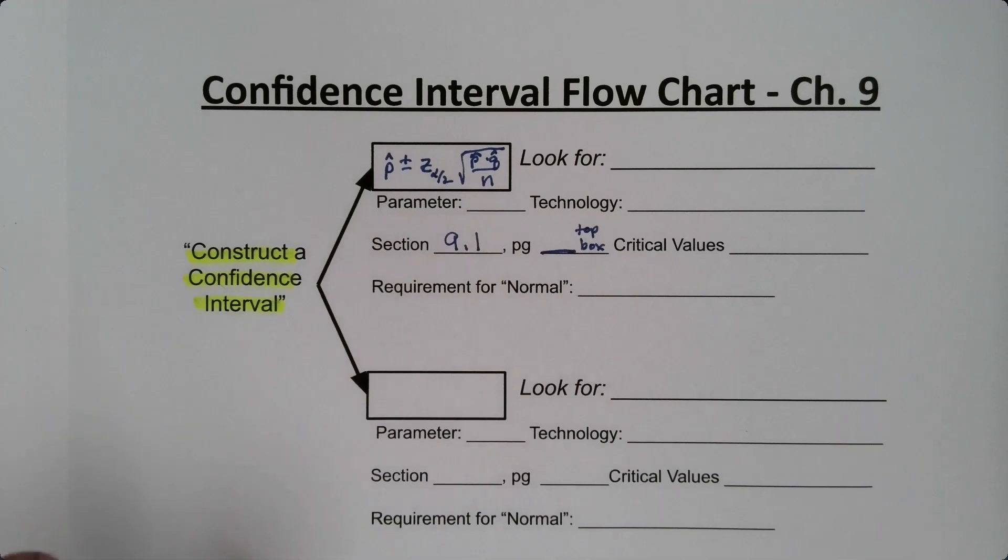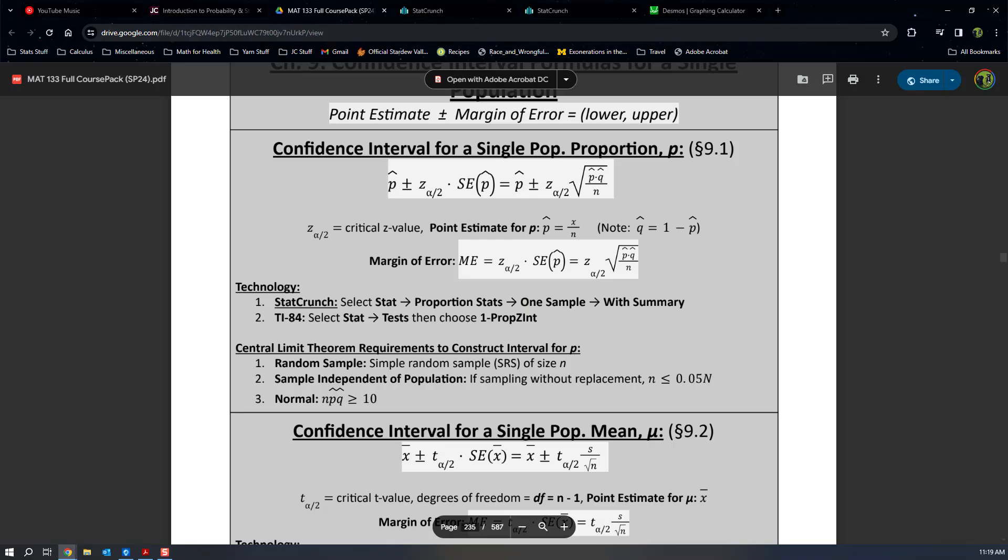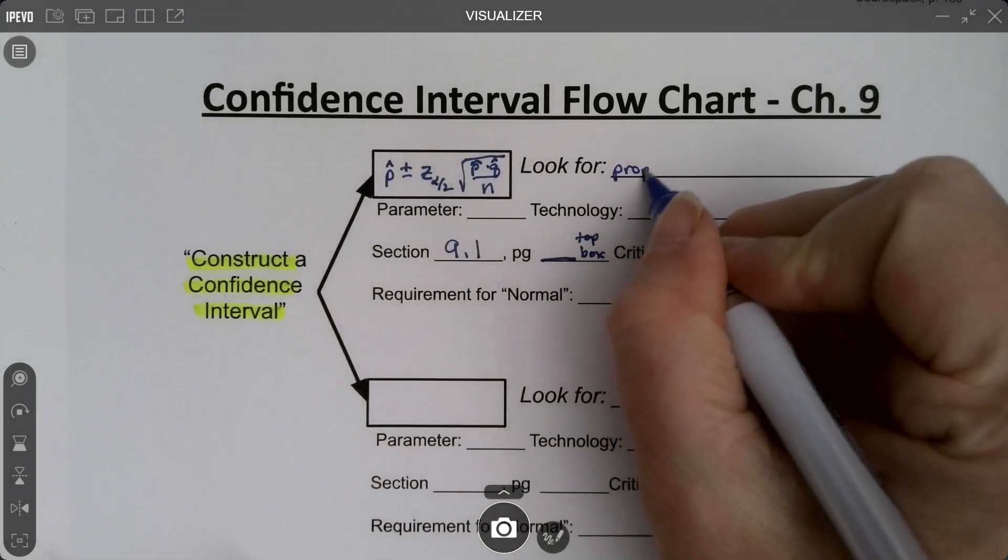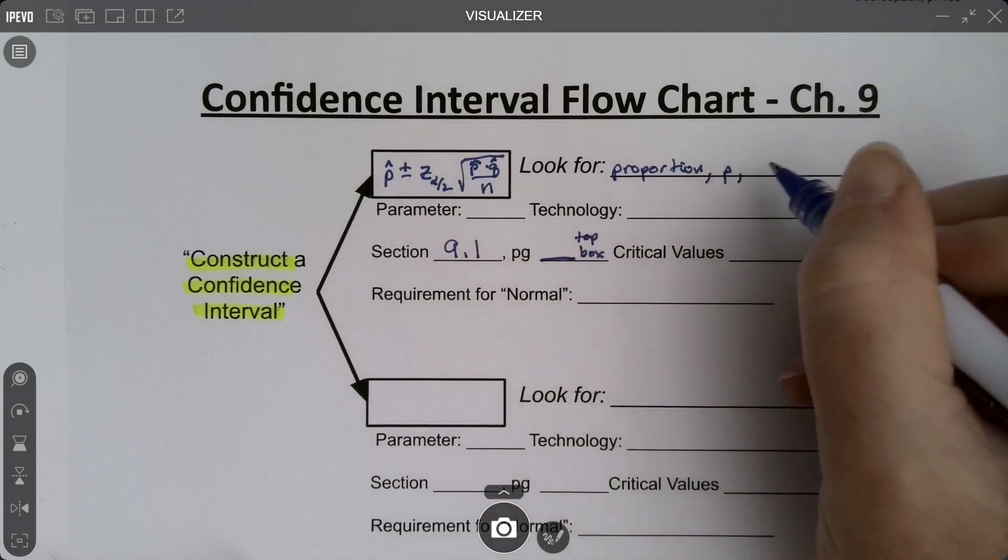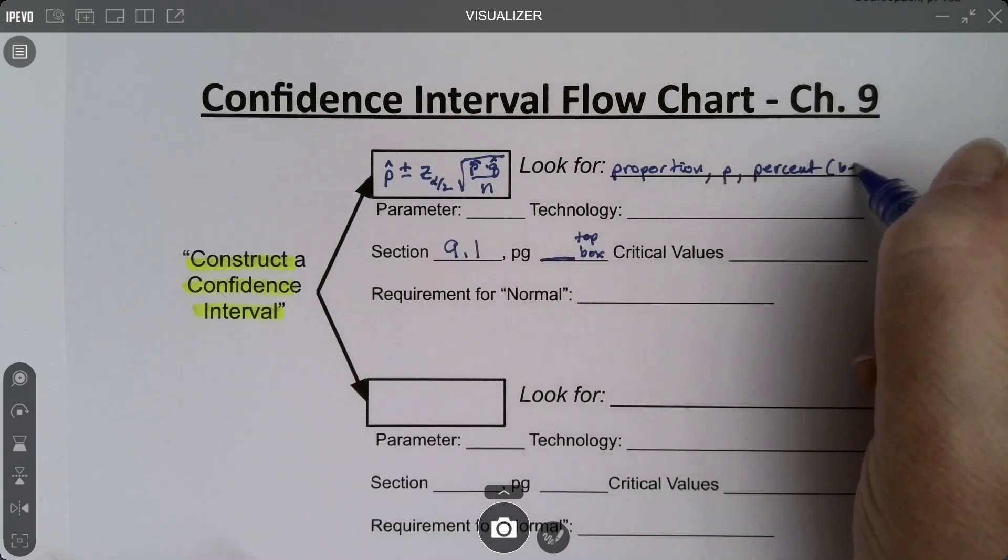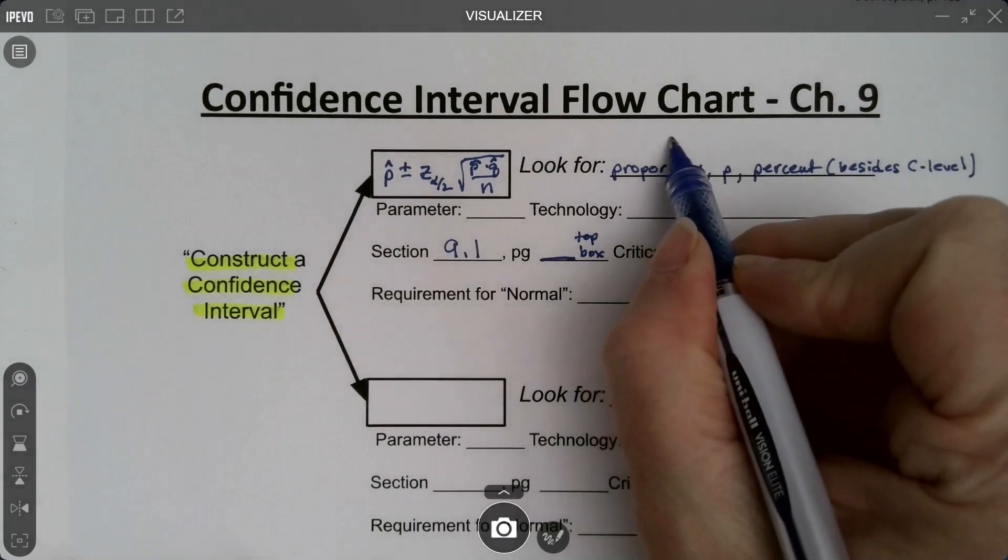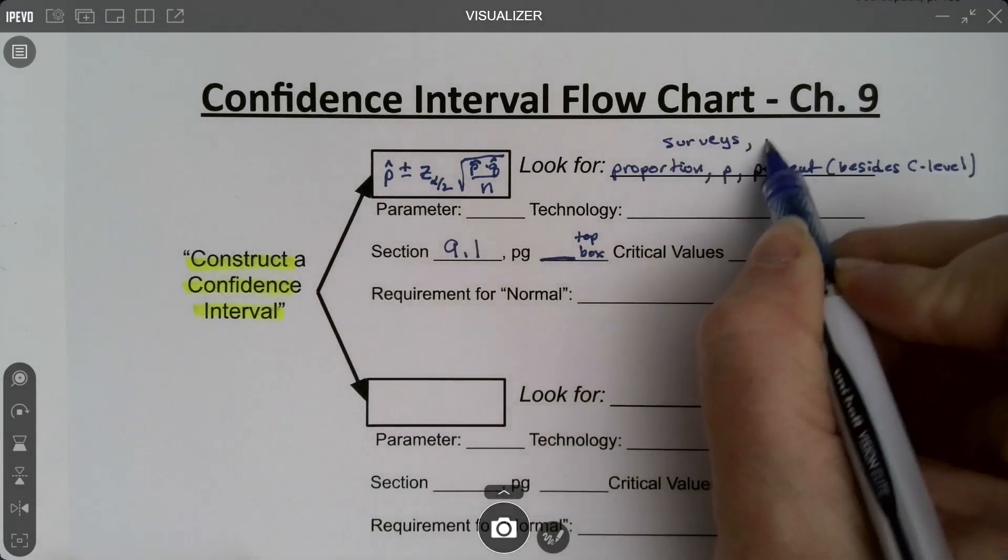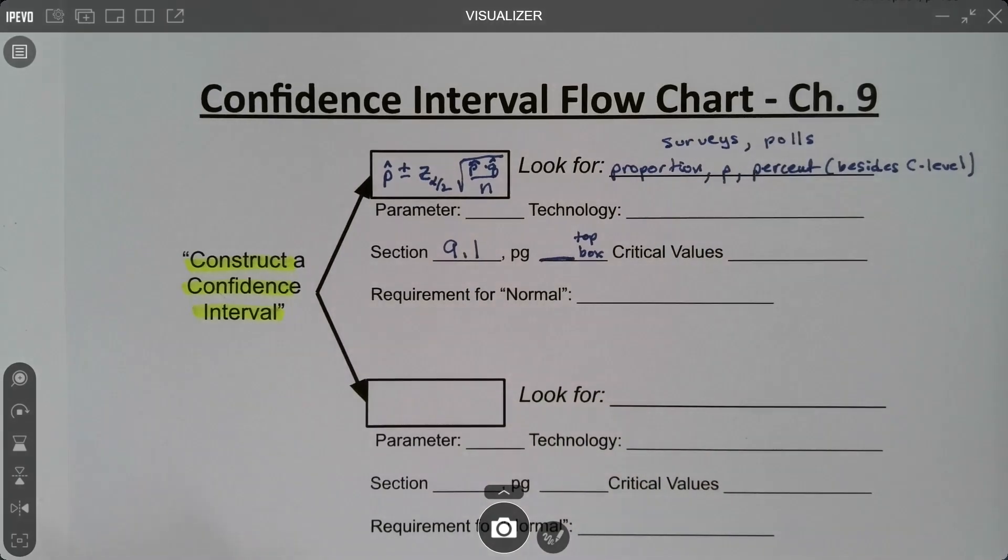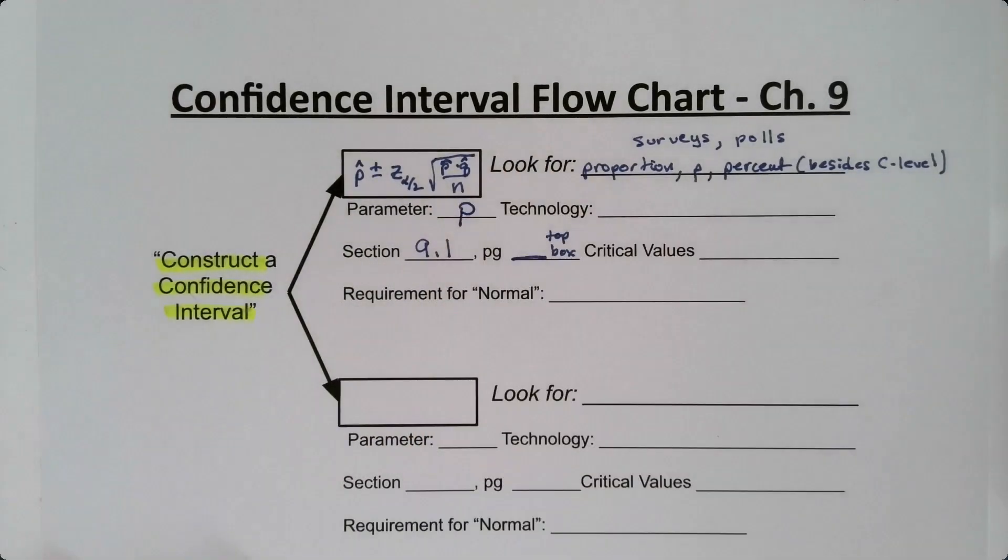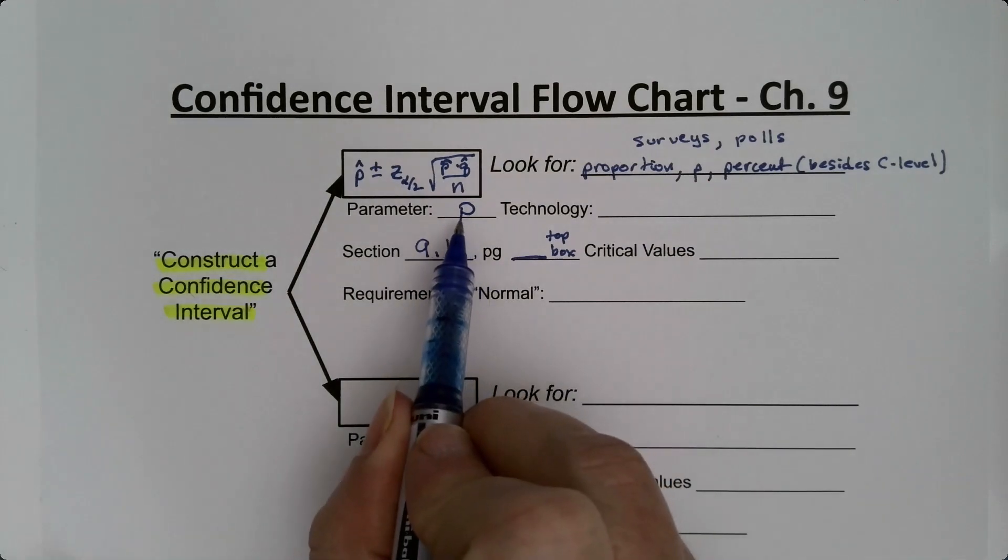Now how are you going to know that that's what you're looking for? Well, because it's going to tell you proportion, or the letter p will be in there, or it'll talk about percents or surveys, right? It'll have words like that. So those are the words you want to look for proportion, or you want to look for p, or you want to look for a percent. By the way, a percent that's not your confidence, right? If they're talking about surveys or polls, we polled this many people, that is a proportion. Surveys and polls are proportions. The parameter we're working with is p, population proportion.